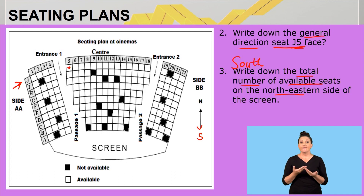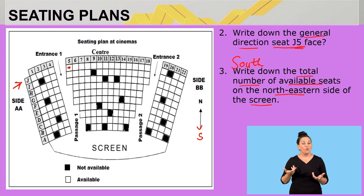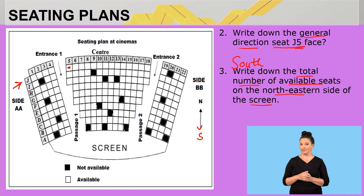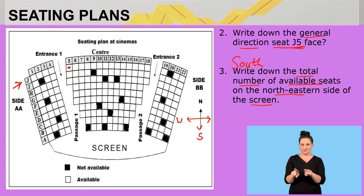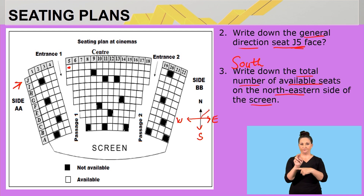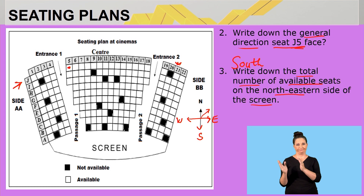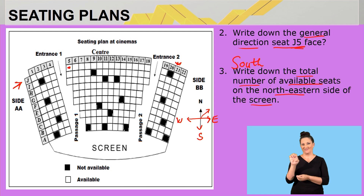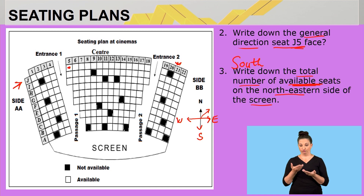Question three: write down the total number of available seats on the northeastern side of the screen. First I need to find northeast, then go to the key to identify what represents available seats. To help find northeast, I'll mark the compass directions — west is here, east is here, so northeast will be this side here. That completes the first part: I've located the northeastern side.